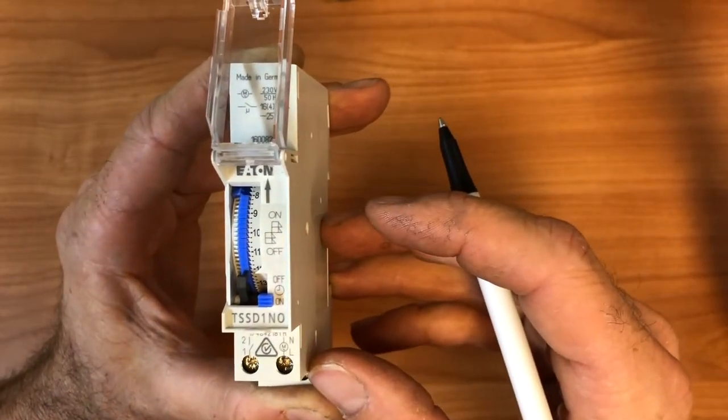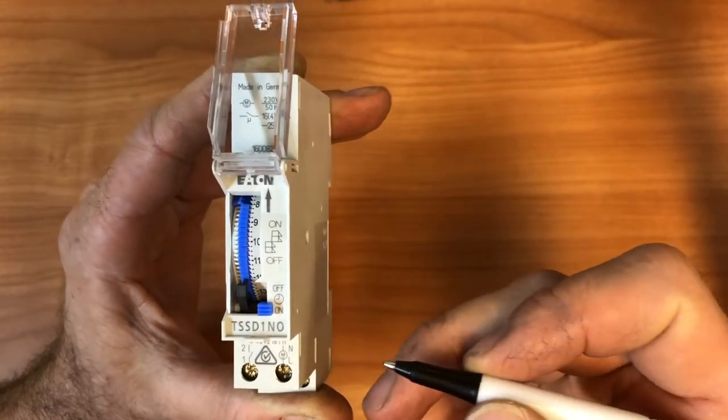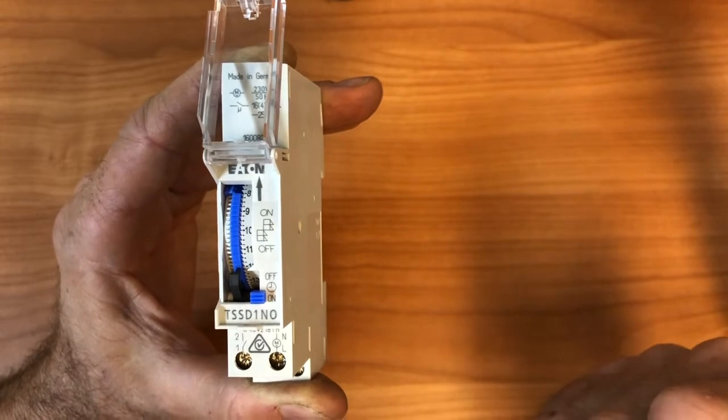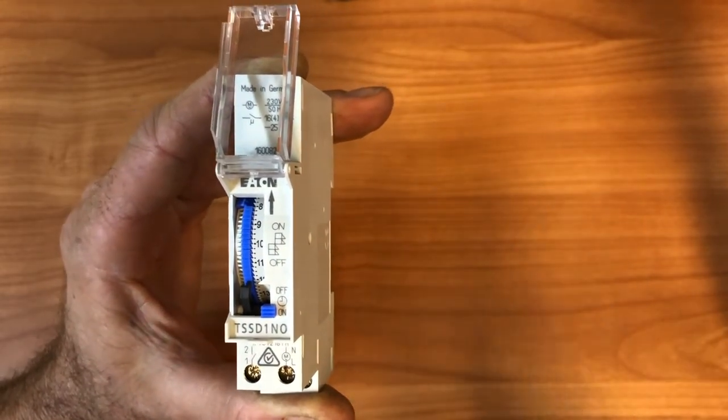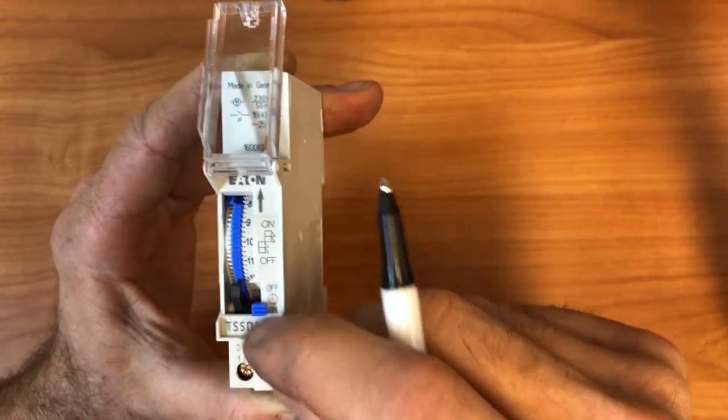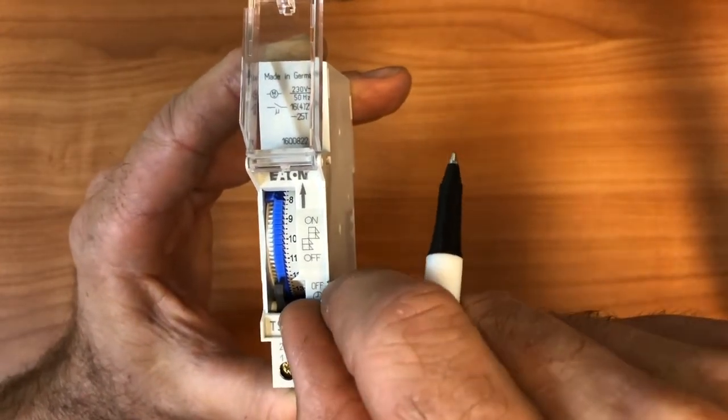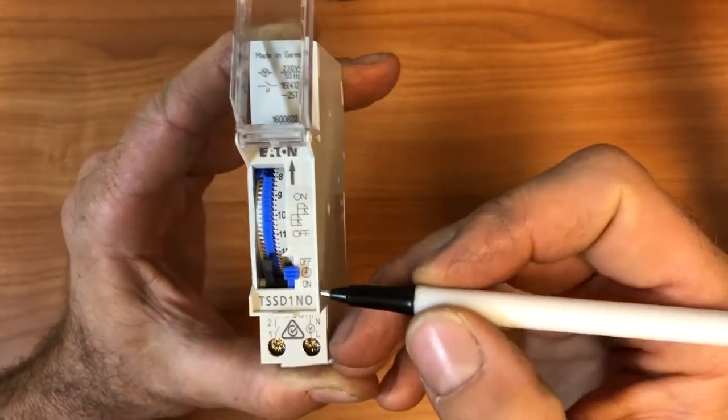So if you had this timer set up for your hot water system and you had people over and you used more hot water than normal because you had more showers going on, and you just wanted to give it an extra boost, you could just bring it down to the on position, boost it for a few hours, then once the visitors are gone you can put it back onto the timer position.